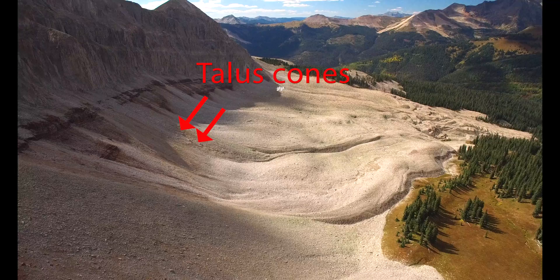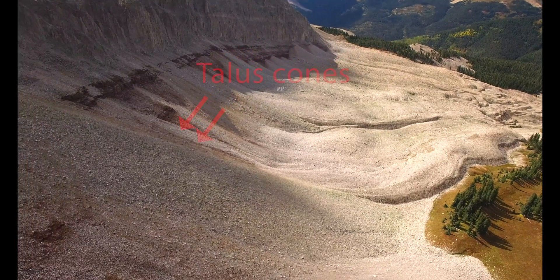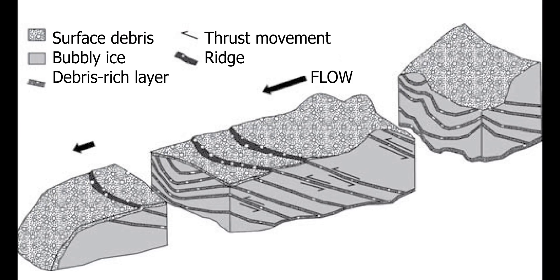The interior of the rock glacier contains ice that allows the glacier to move downhill and deform, creating characteristic flow features and complex morphologies.